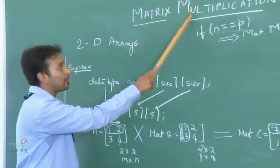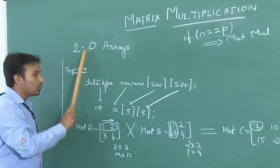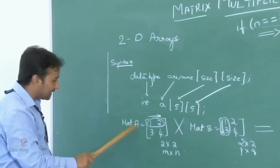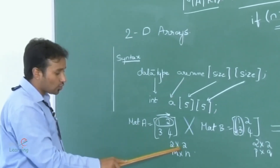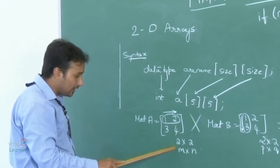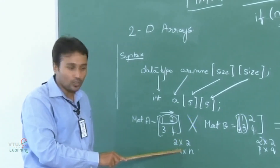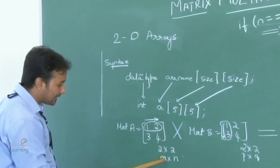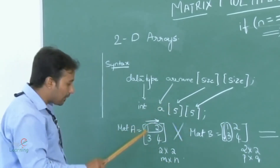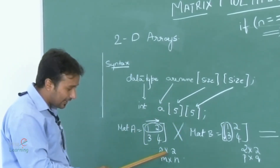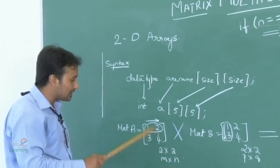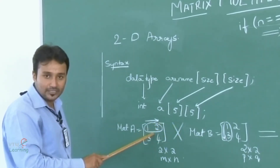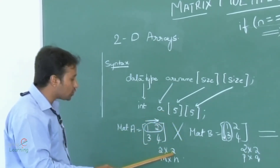Since we are considering matrix multiplication, we require 2D arrays. Let us take an example of matrix A which is of the order 2 cross 2. Here the order is the total number of rows to total number of columns, represented using variables M and N. The total number of elements inside a 2 cross 2 matrix is always 4 — they are 1, 2, 3 and 4.